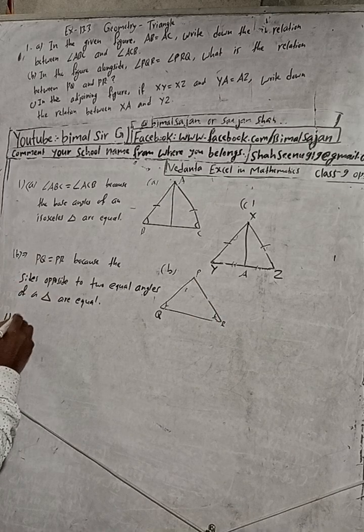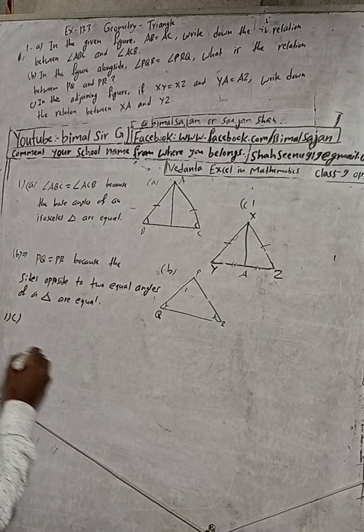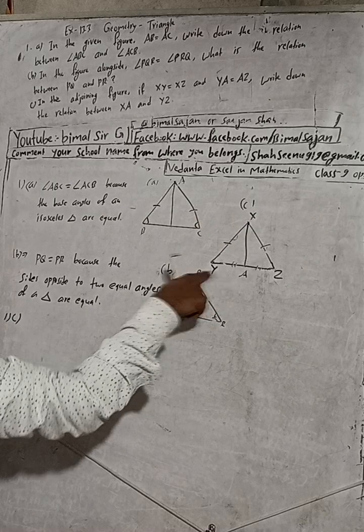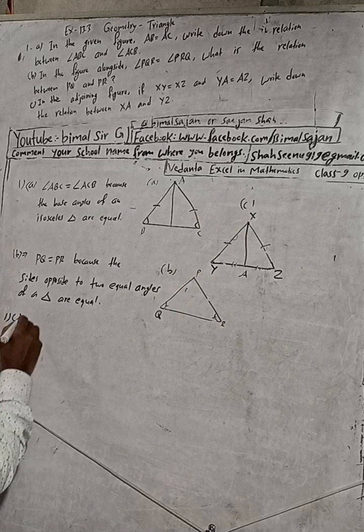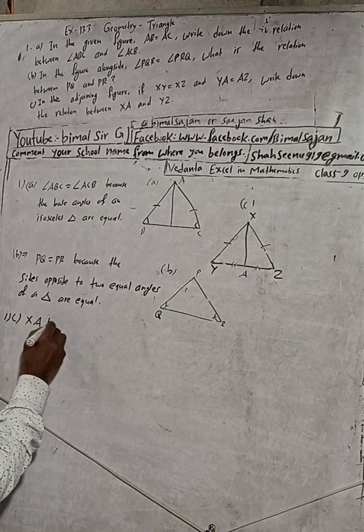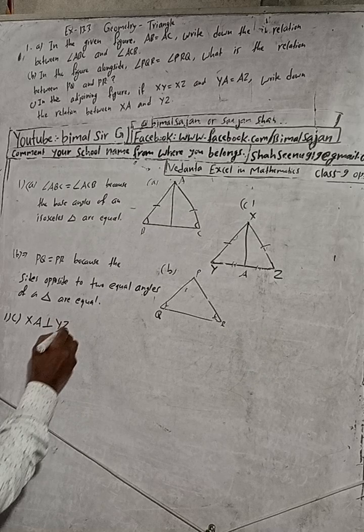For 1C, we can write that XA is perpendicular to YZ.